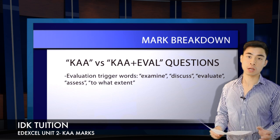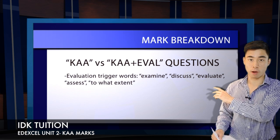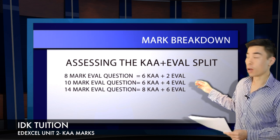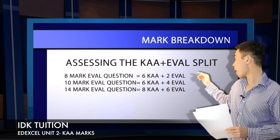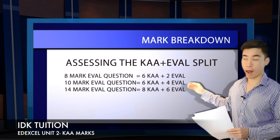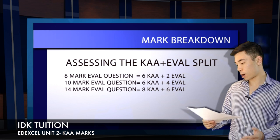The next step is assessing the allocation of marks on offer for any given question — figuring out how many marks are available for the evaluation component as opposed to the KAA component. Even within an evaluation question, there are still KAA marks on offer. The allocation of KAA marks is always going to be less than 50%. For an eight-mark evaluation question, you get six KAA marks and two evaluation marks. For a ten marker, there's a six-four split, and for a fourteen marker, there's an eight-six split.